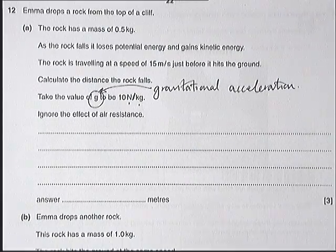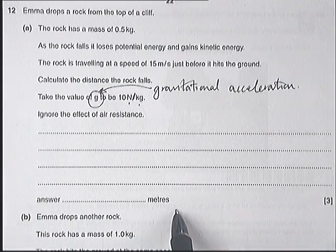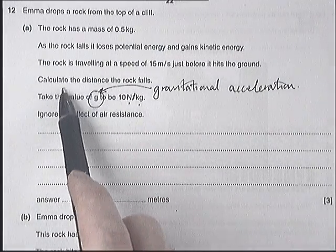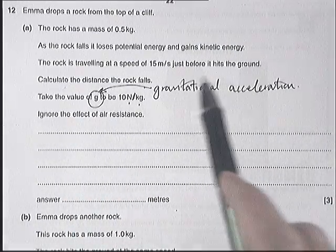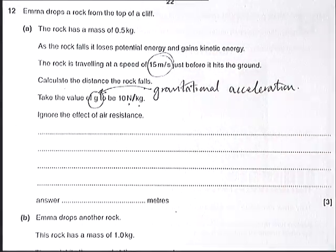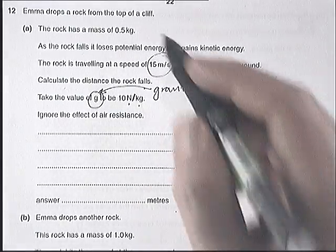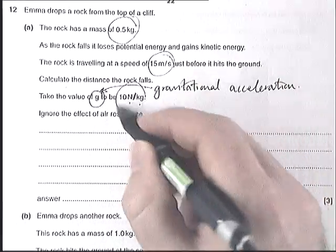So for this one, you have to work out the distance, the height that you have. Calculate the distance the rock falls. In other words, how high have you lifted the rock so that it hits the ground at 15 metres per second? You've got some other data - the mass and little g.